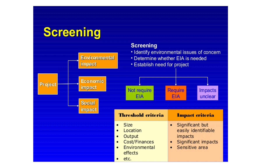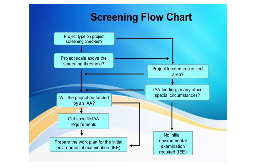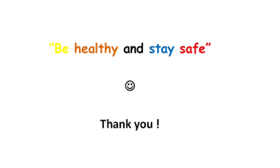These are the steps for the screening process. We are looking for different impacts in three steps, using threshold criteria and impact criteria. This covers the total screening process, illustrated in a flowchart — a big picture overview. The initial steps will look for the IEE report.